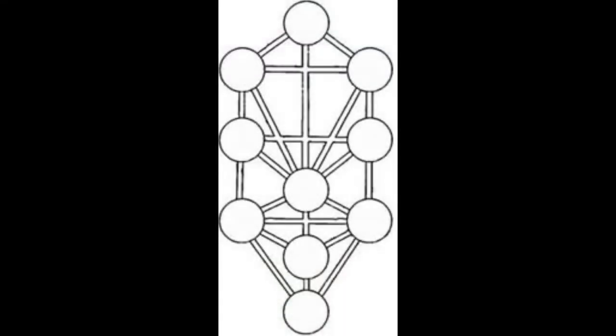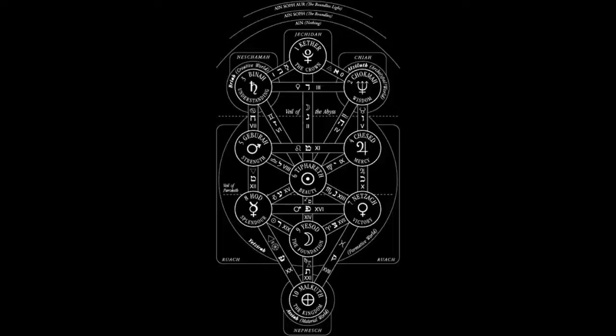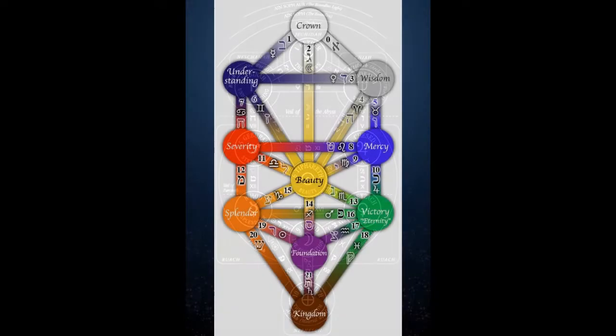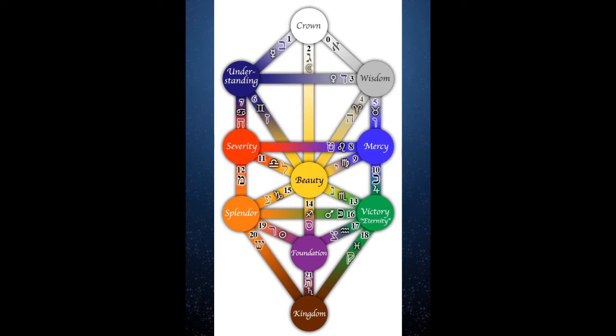The Tree of Life is supposedly a Jewish or Hebrew conception — the Tree of Life of the ten sefirot: Keter, Chokmah, Binah, Chesed, Geburah, Tifaret, Netzah, Hod, Yesod, and Malchut. These are the ten so-called objective spheres of being, and the paths between them would be the subjective experiences.